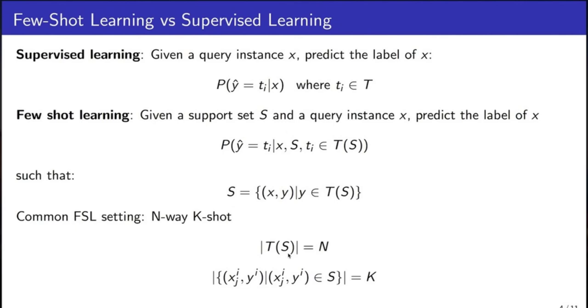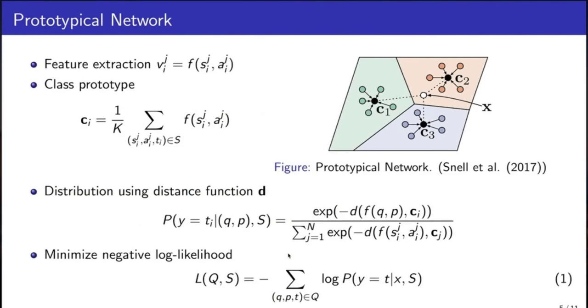There are many models that have been proposed for few-shot learning, one of them is prototypical network. In prototypical network, the model first encodes query instance and support instances using a neural network denoted by function f.